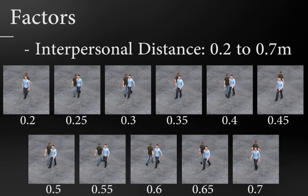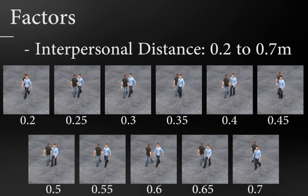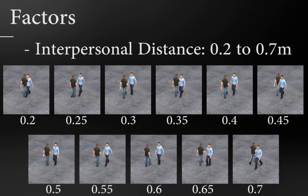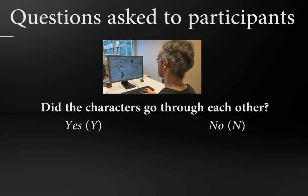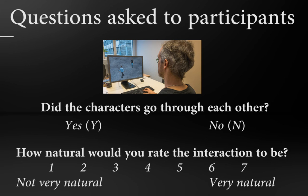The second factor is the interpersonal distance between the two characters. It ranges from 0.2m to 0.7m. Based on these parameters, several stimuli were presented to participants who had to answer two questions each time. Did the characters go through each other? And how natural would you rate the interaction to be?